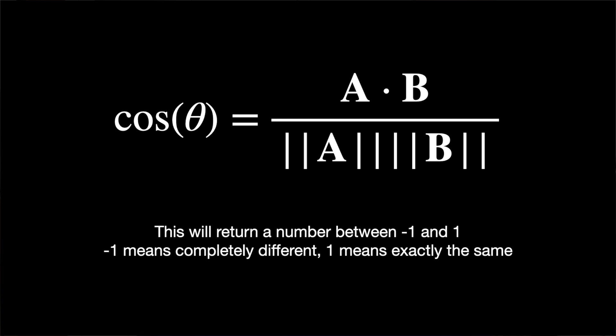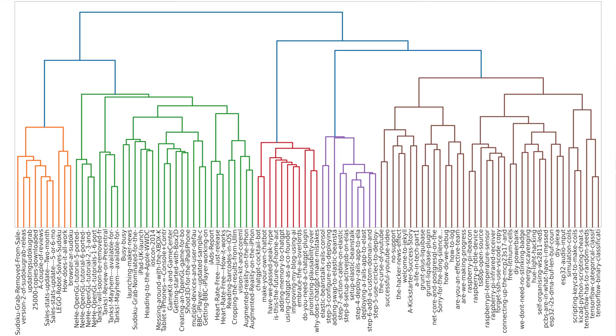It's really fun to visualise this. I've created a dendrogram plot of the embeddings, and you can see just how well articles cluster together. So we've got our new summaries, tags, and related articles — we just need the images now.